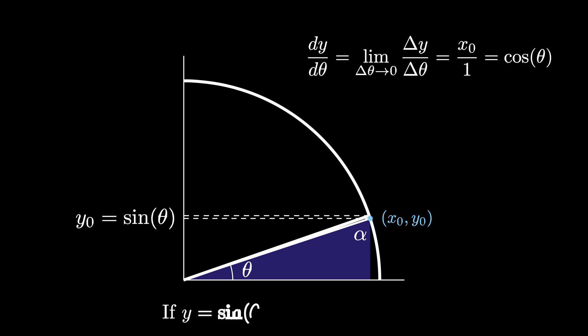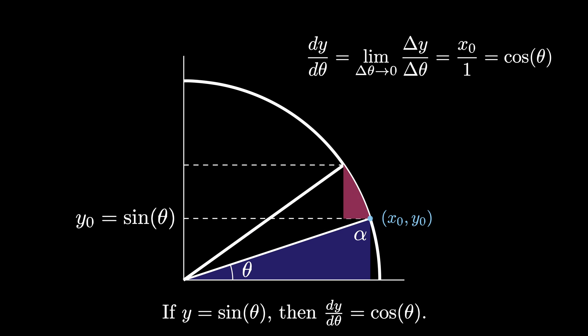This means that if y equals the sine of theta, then the derivative dy d theta equals cosine of theta. So this geometric picture shown here has all the information we need to determine that the derivative of the sine function is the cosine function.